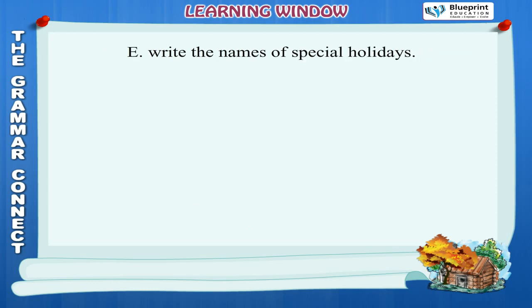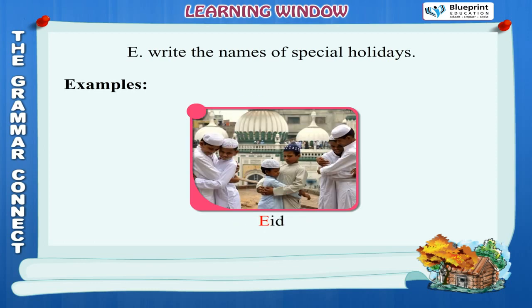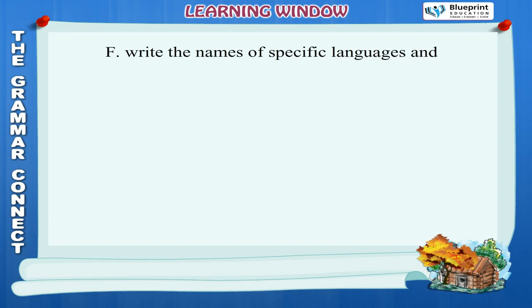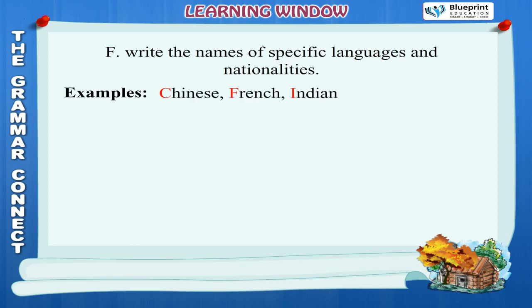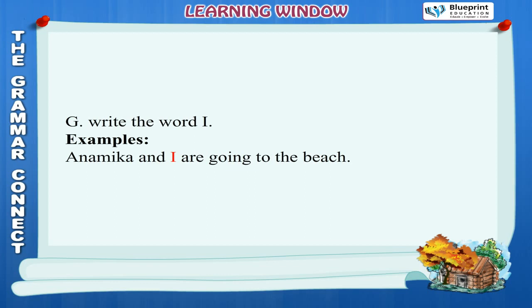We use a capital letter to: (E) Write the names of special holidays. Examples: Holi, Christmas, Diwali, Eid. (F) Write the names of specific languages and nationalities. Examples: Chinese, French, Indian. (G) Write the word I. Example: Namika and I are going to the beach.